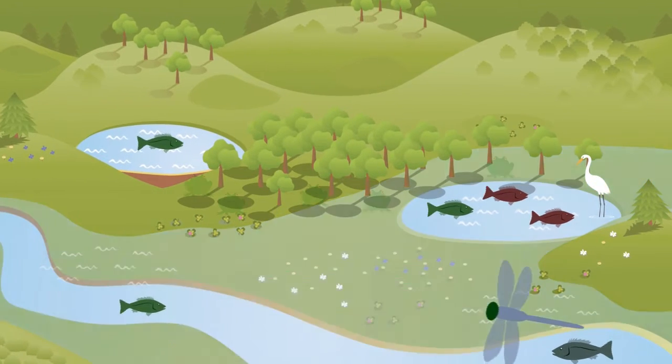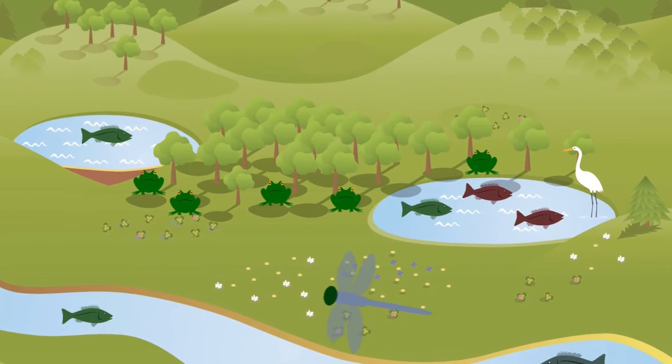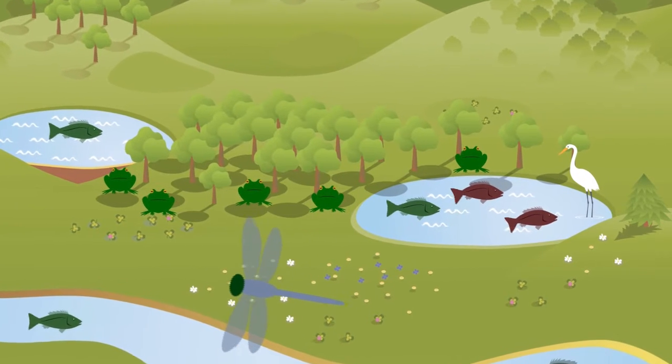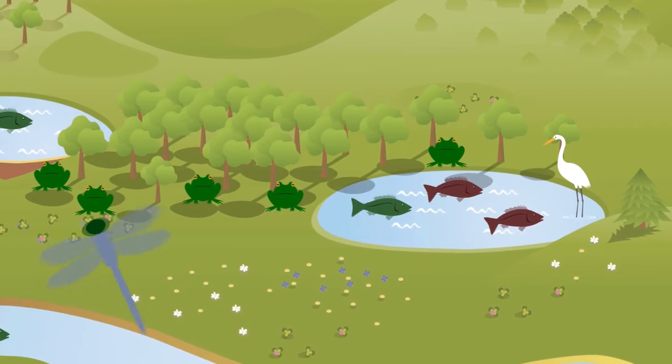After the water recedes, the fish become isolated until the next flood. So the lake is an essential part of the ecosystem, allowing local species to thrive.